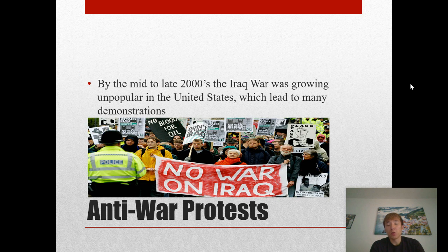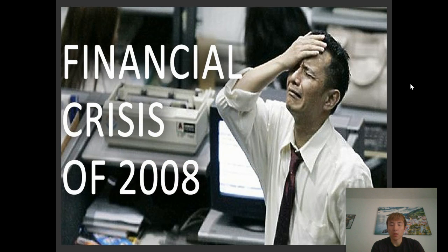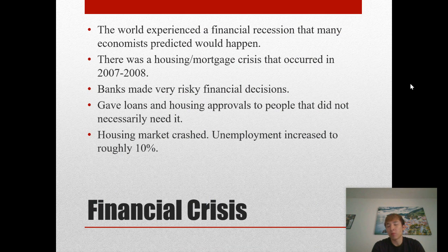By the mid to late 2000s, the Iraq War was growing very unpopular in the United States, which led to many demonstrations and protests. Also in 2007 to 2008, not just the United States but the world was going through a financial crisis and a recession, which still happened under George W. Bush's presidency and did not look good on him. There was a housing and mortgage crisis — many banks made very risky financial decisions, giving loans and housing approvals to people who did not necessarily qualify. The housing market crashed and unemployment increased to roughly 10 percent.